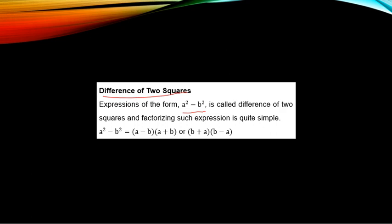A squared minus B squared is equal to (A minus B)(A plus B), or equivalently (B plus A)(B minus A). You don't mix them. That is, your first bracket — if you are starting with A, the second one should also start with A. And, the two brackets: one has plus and the other has minus. Whichever form you choose to use, you are correct.